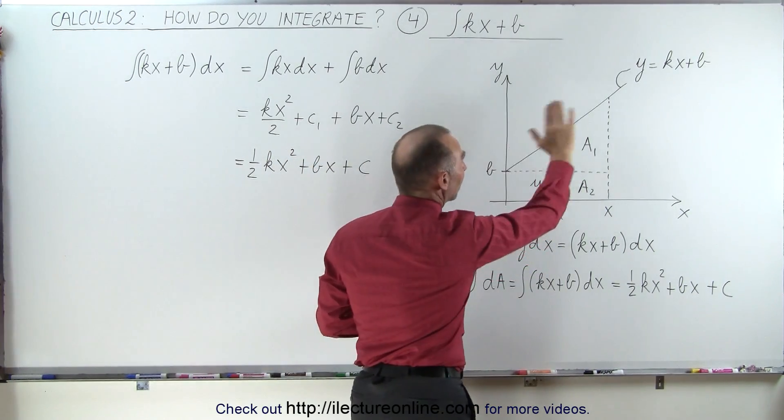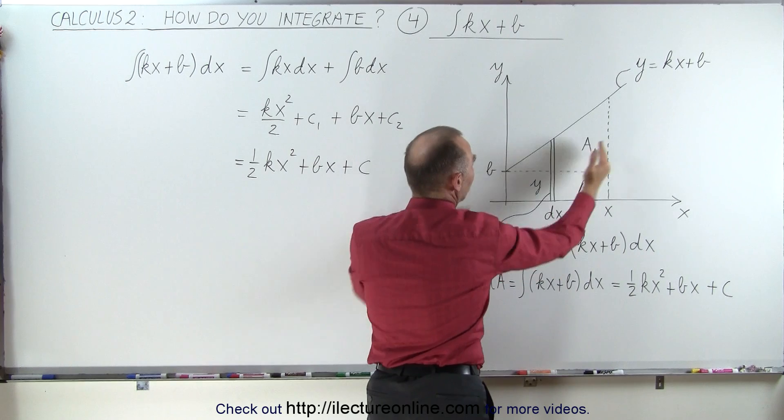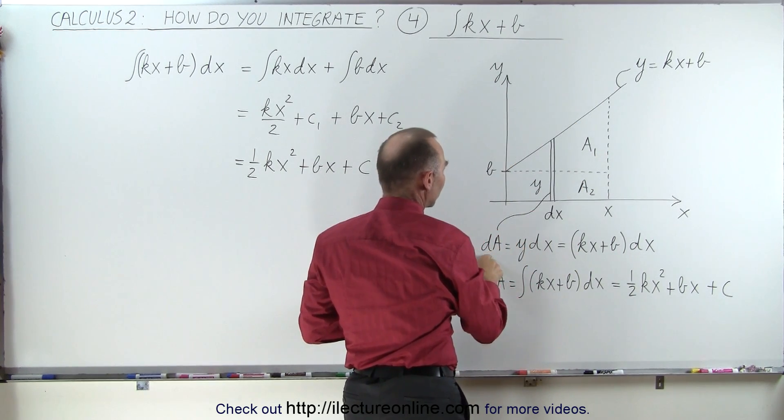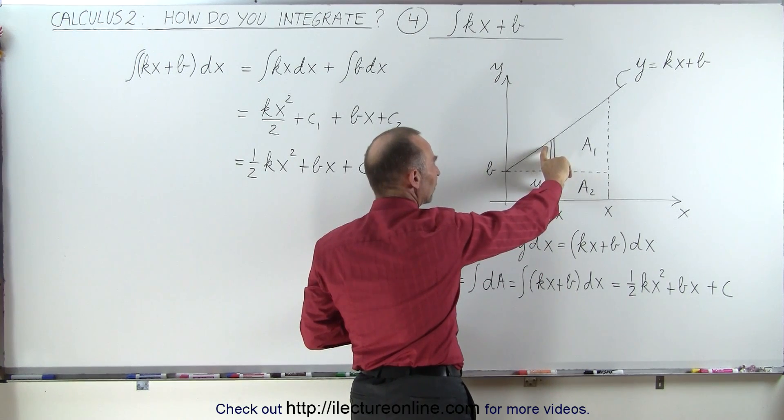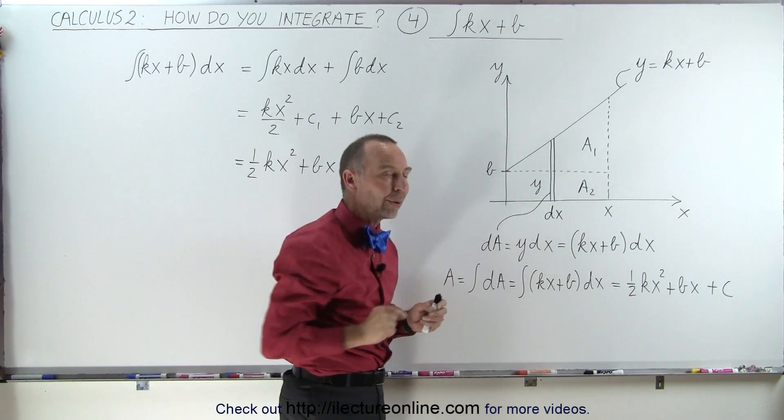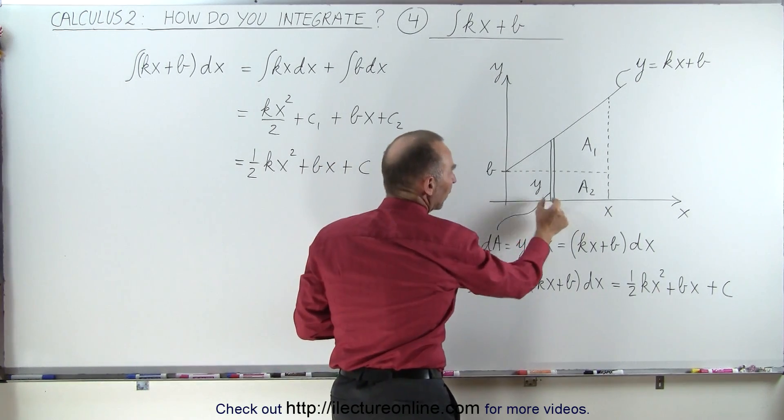If you want to know the total area of this portion underneath the curve, we integrate all the dA's. The dA's will be the height times the width of this little sliver here, a very tiny little rectangle with very small thickness, dx.